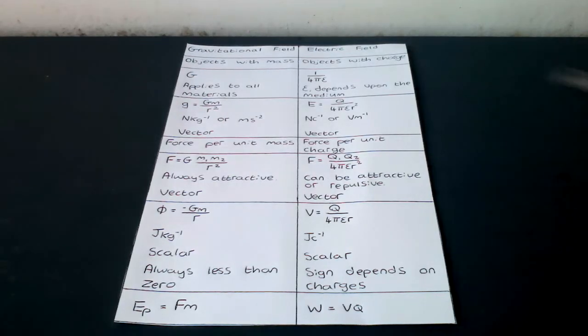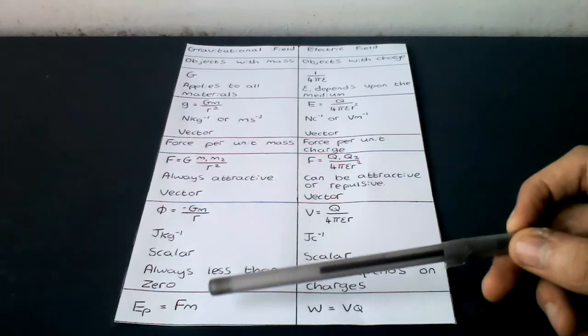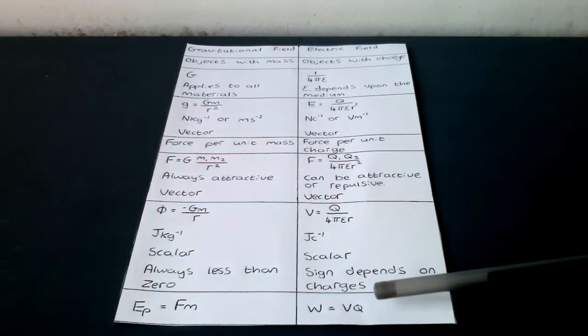And the potential energy: e p equals f times m, and w equals v times q.